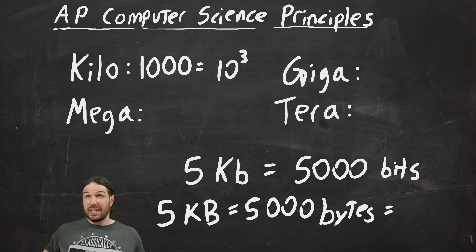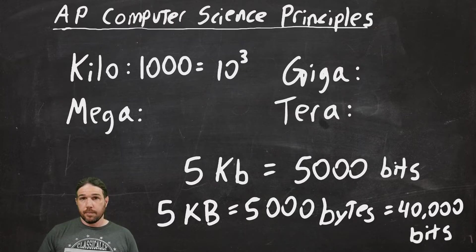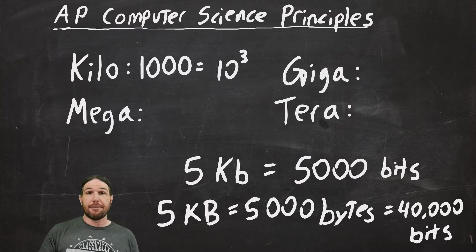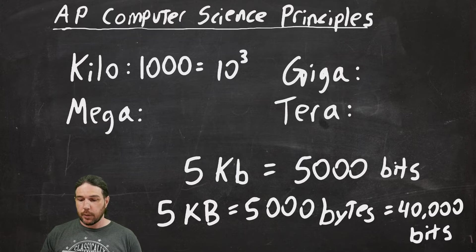So, five kilobytes would be five thousand bytes, which would be, if I can do the math correctly, forty thousand bits. The difference between a bit and a byte is a factor of eight. You just multiply by eight to get how many bits you have. Or if you have the number of bits, you divide by eight to figure out how many bytes you've got.